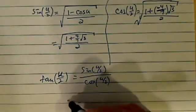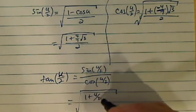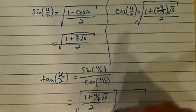So let's put this together. We have the square root of (1 plus 4 radical 3 over 7) divided by 2, which is the sine.